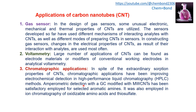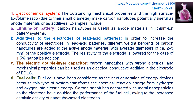Parametric detection with GC modified with multi-walled carbon nanotubes has been satisfactorily employed for selected aromatic amines. It was also employed in ion chromatography of oxidizable amino acids and thiosulfate. The outstanding mechanical properties and high surface-to-volume ratio make carbon nanotubes potentially useful as anode material or additives.